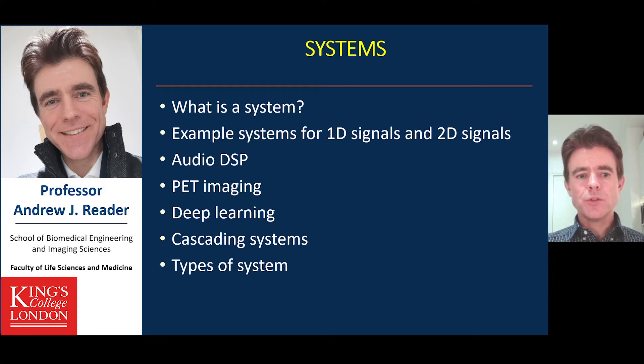So here we're going to go into systems in more detail. We're going to cover example systems for 1D and 2D, looking at audio, DSP (digital signal processing), medical imaging, deep learning as examples, and showing how these can be cascaded or linked together to give an overall system. And then we'll briefly review the types of system that we may come across and emphasize a particular simple type of system that we will focus on in this module.